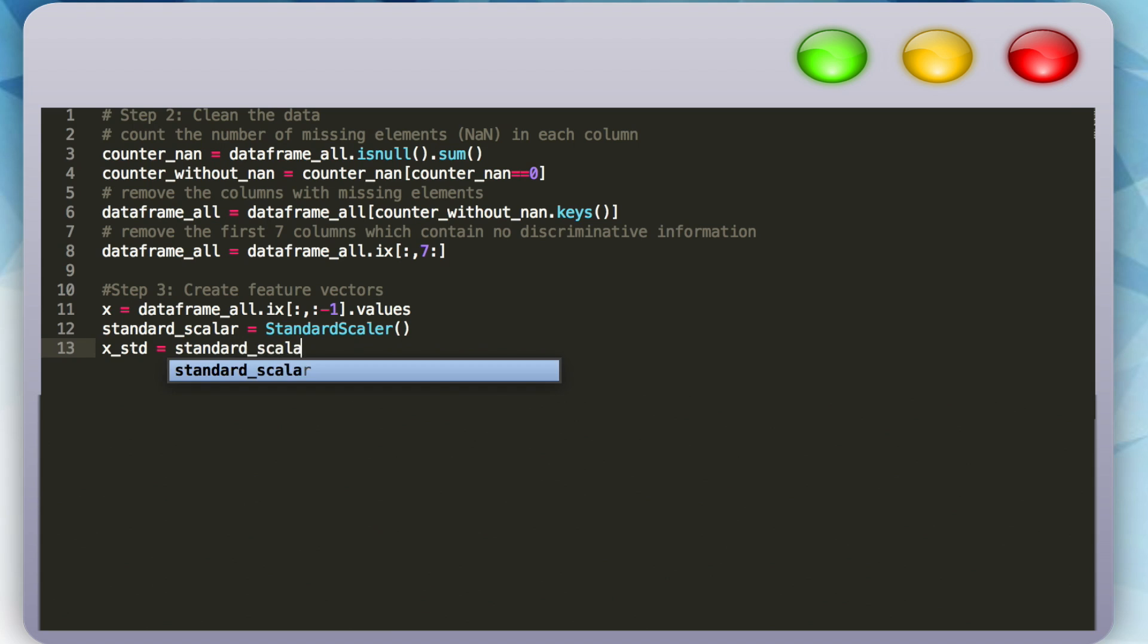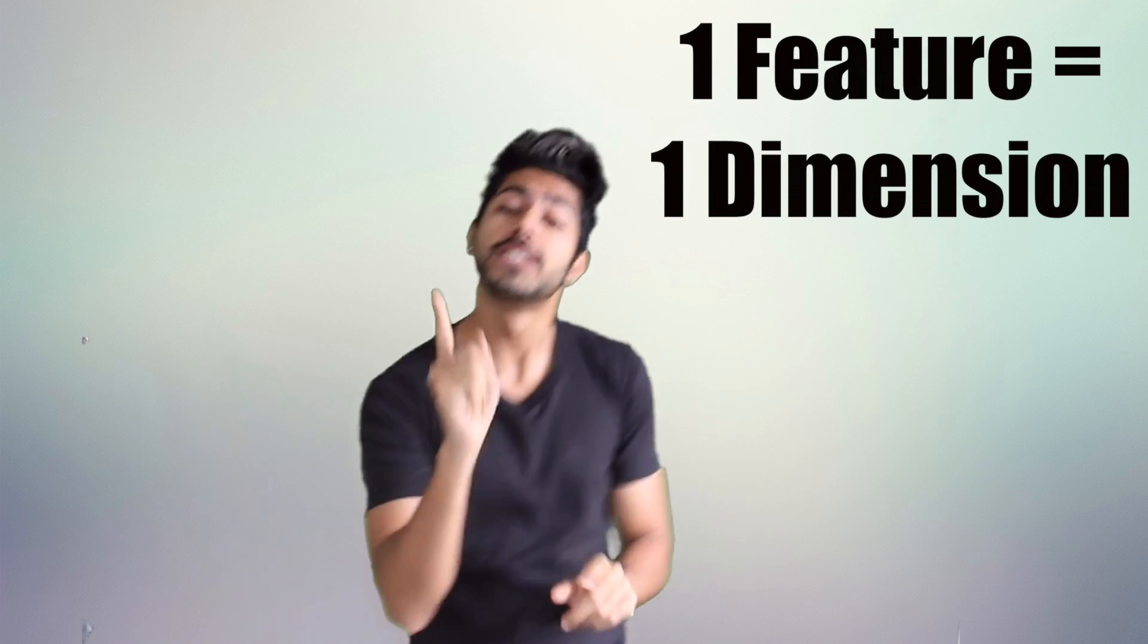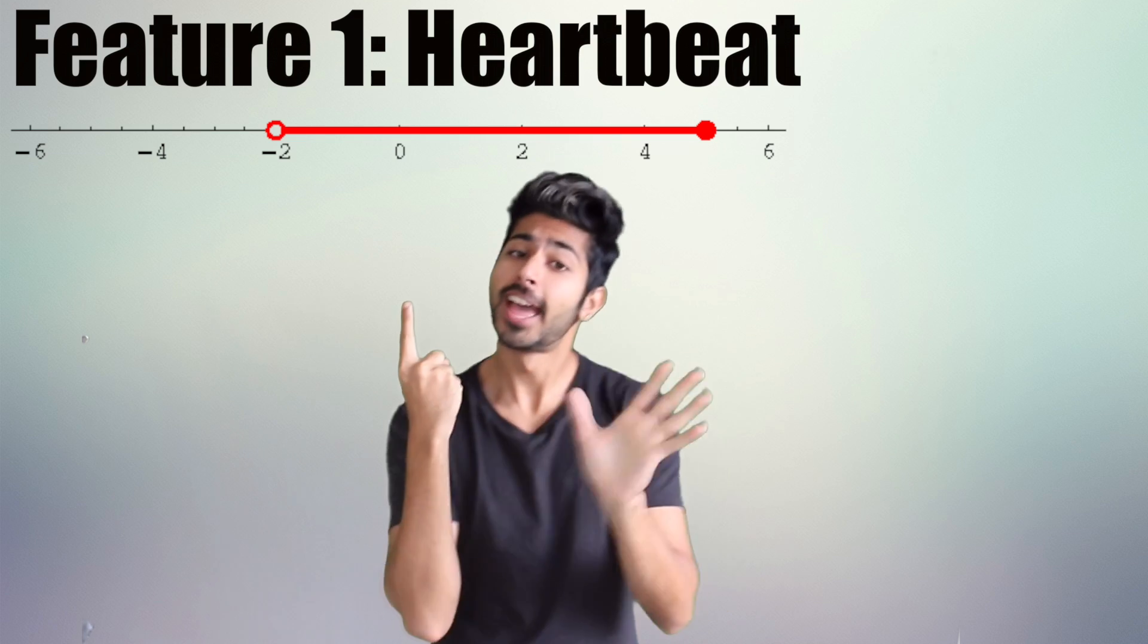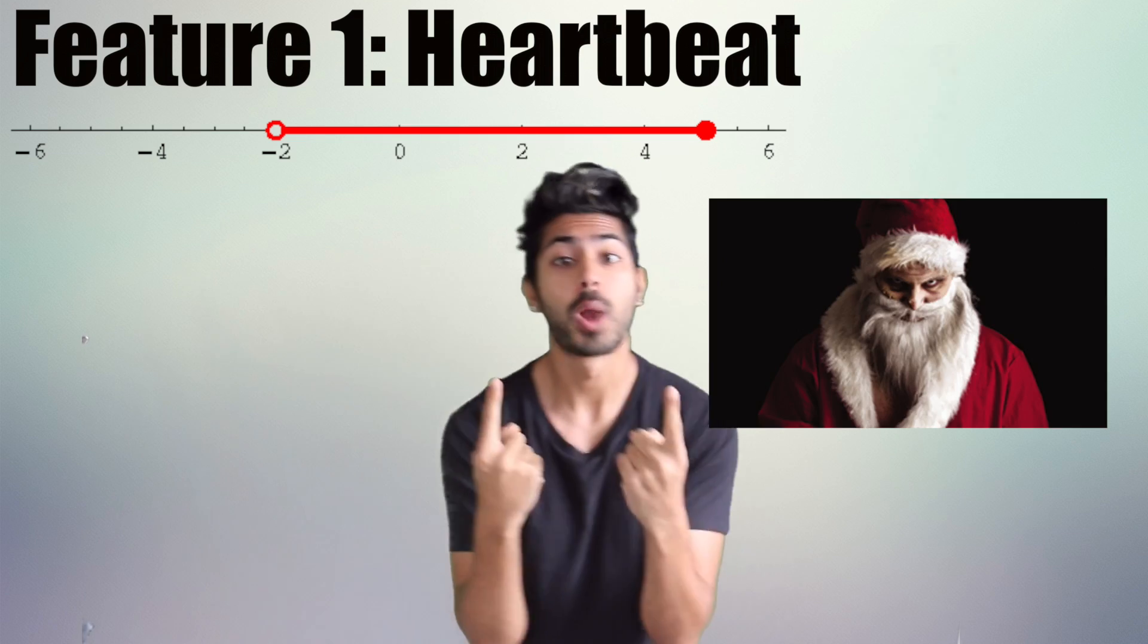We'll store the resulting 70 dimensional feature vectors in the XSTD variable since 70 is the number of features we have. I've been sitting here trying to understand this data set. Each feature's a dimension and I know that's correct. If each feature equals one dimension, that ain't no sweat. Checking heartbeat, that's easy. If it goes up, then there's a threat. But behold,